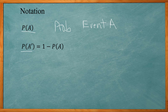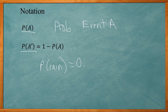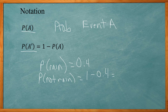The second one is the complement. When you see that tick mark, it denotes the complement. The probability of its complement is equal to one minus the probability of event A. So if the probability that it will rain today is 0.4, its complement would be the probability that it will not rain — that's one minus 0.4, which gives you 0.6. So a 40% chance of rain means a 60% chance it won't rain.